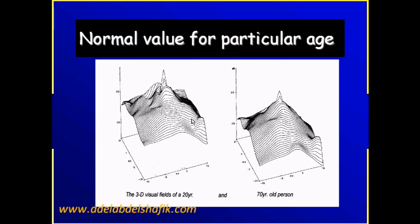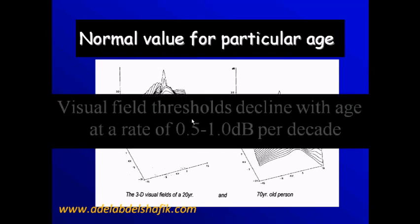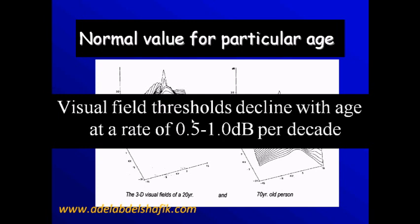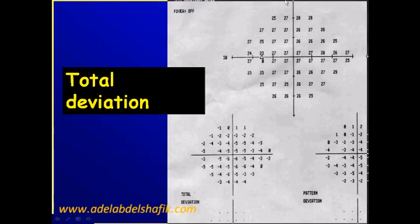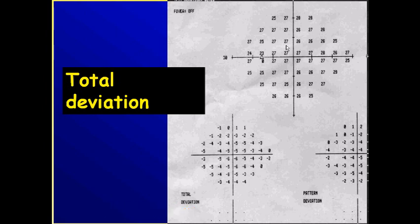It is known that every decade — every 10 years — the sensitivity of the retina decreases by half to one decibel. So the machine needs to compare the sensitivity of our patient with the normals of the same age. For example, say this point has a patient sensitivity of 27, but the normal sensitivity for the same age at this area is 31, not 27. So you get a printout here of minus 4.